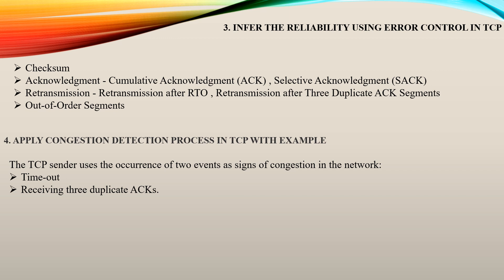TCP also follows retransmission — retransmission after RTO (timeout) and retransmission after three duplicate acknowledgements. If any segment of data sent from the sender is not received by the receiver, after three duplicate acknowledgements the sender can retransmit the data. Out-of-order segments occur when, for example, segment 1 is received, segment 2 is not received, but segment 3 is received — that is an out-of-order segment. TCP handles and clears out-of-order segments, which contributes to the reliability of error control in TCP.